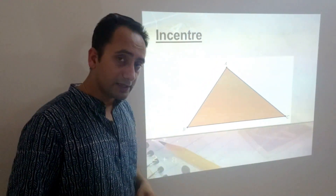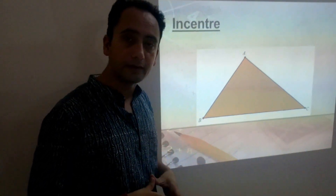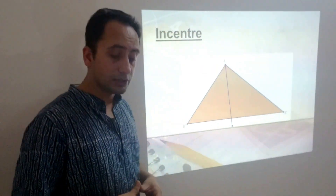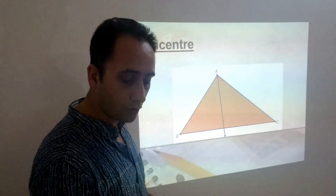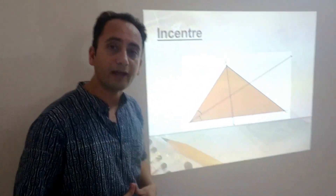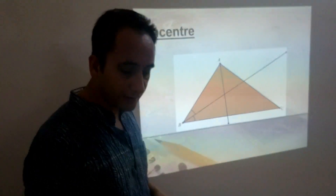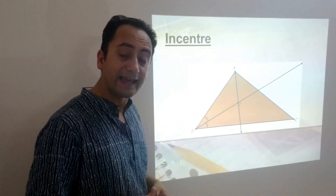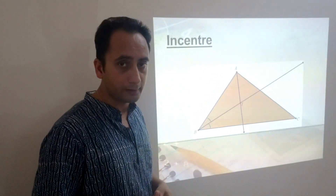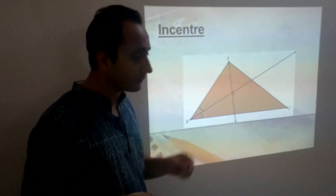Next center is Incenter. Let us suppose we have a triangle ABC. Let's draw the angle bisector of angle A, and similarly we shall draw the angle bisector of angle B. Now these two angle bisectors intersect at a point, and that point is represented by I and is known as the incenter of a triangle. We don't require to draw the third angle bisector, because even the third angle bisector will intersect at I only.